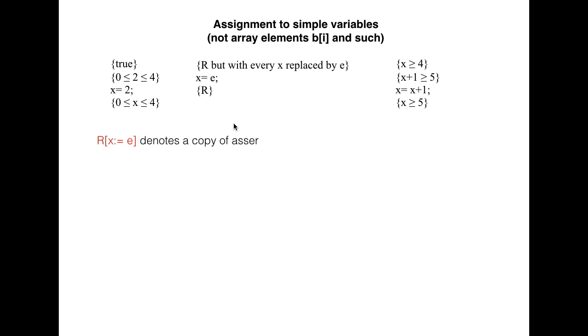To define this carefully, we introduce the notation R bracket x colon equal e close bracket to denote a copy of assertion R, but with each occurrence of x replaced by e.